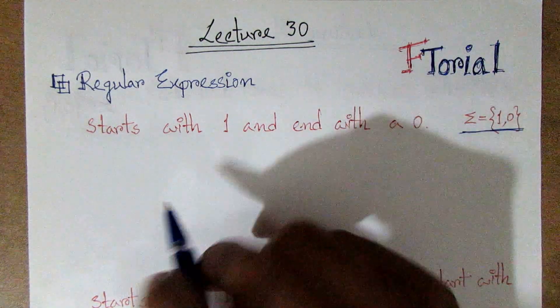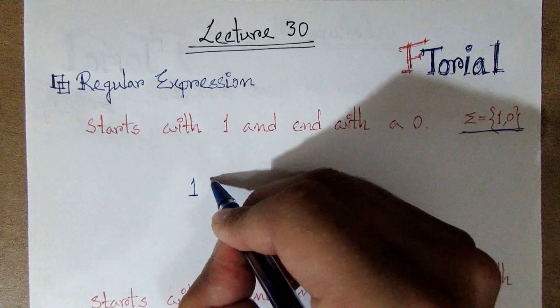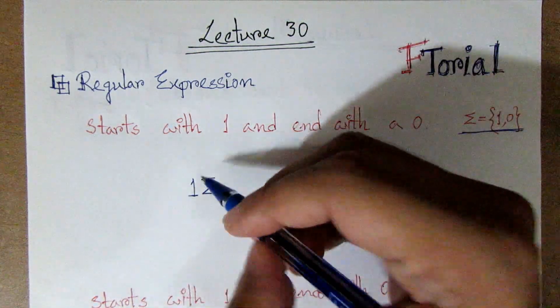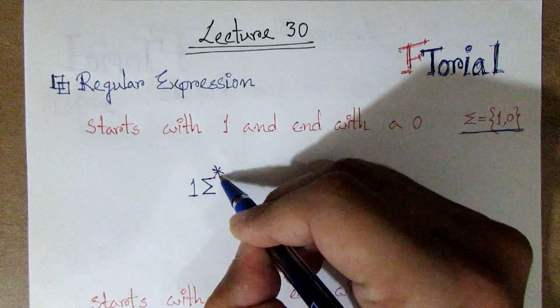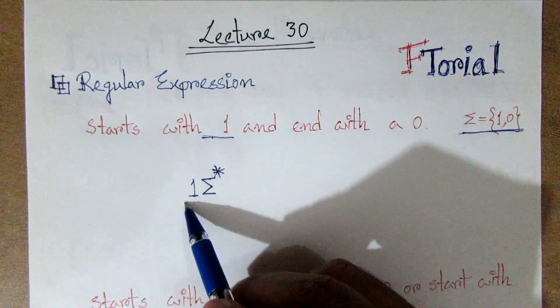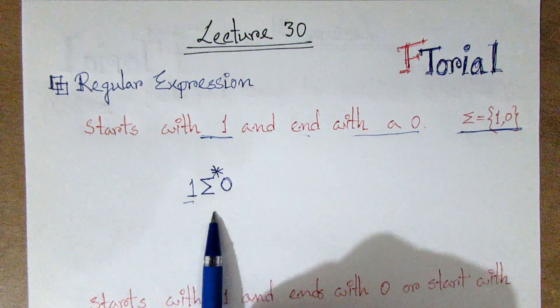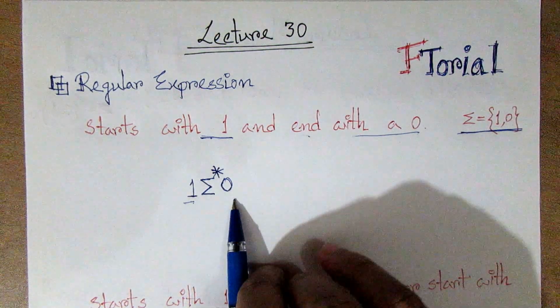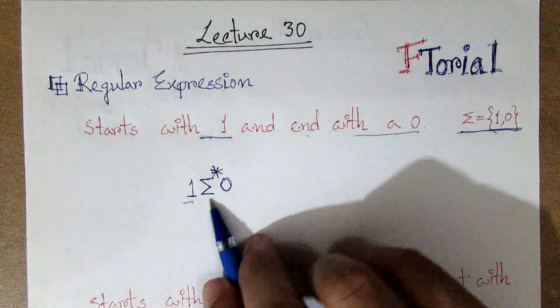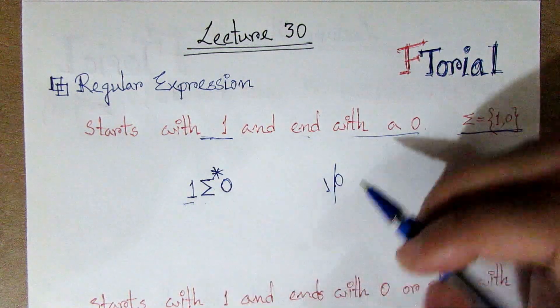This is the regular expression. So, we can start of 1. 1 is start of 1. We can start of 1 and end. Then we can start of 1 and ends with 0. The expression is 1 and then 0. I will tell you how to use star operation.